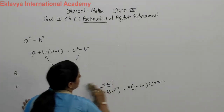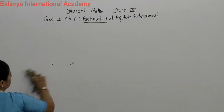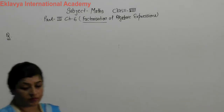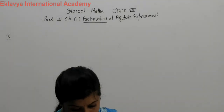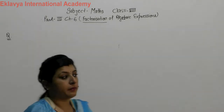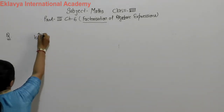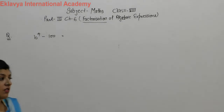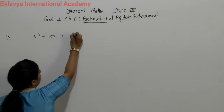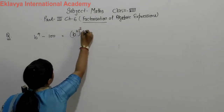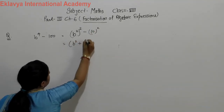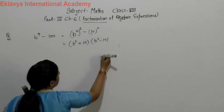Let us take another example: B⁴ - 100. We can say B⁴ is the whole square of B², and 100 is the whole square of 10. Then applying the identity A² - B², it becomes (B² + 10)(B² - 10). That is our answer.